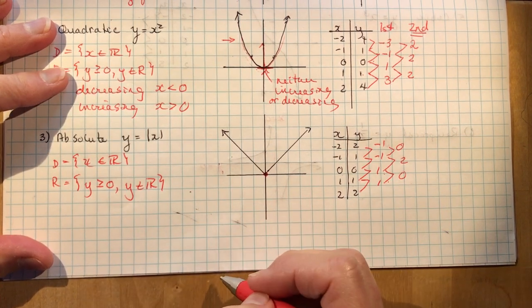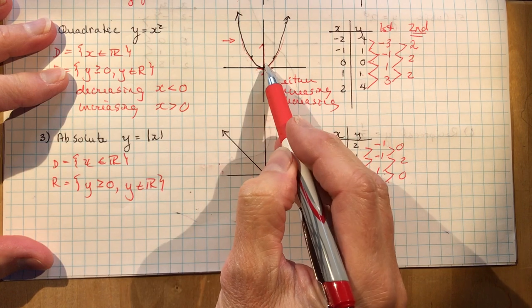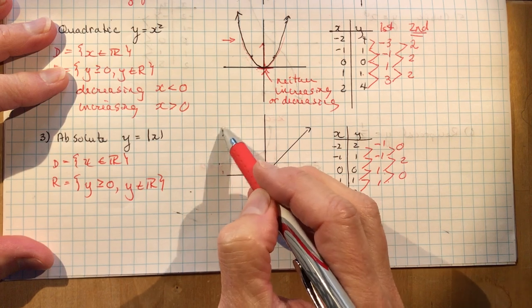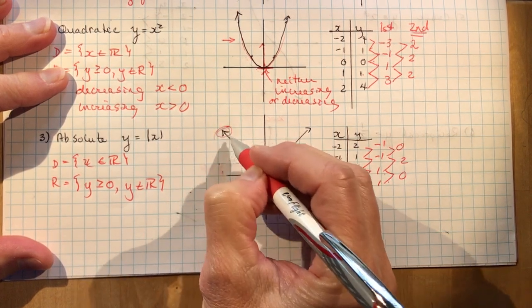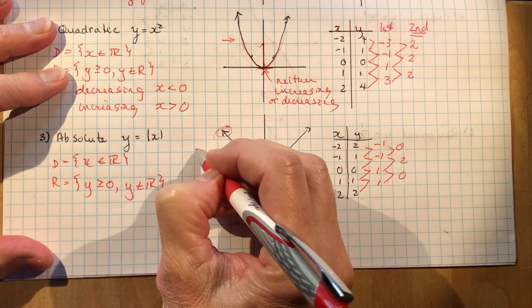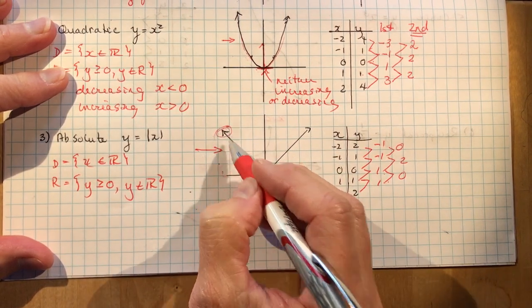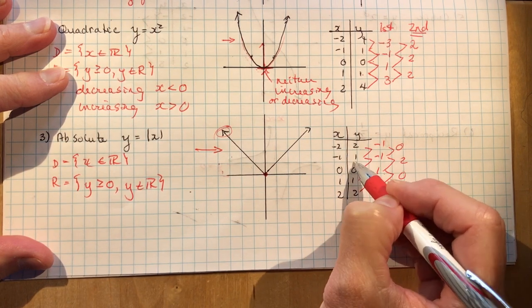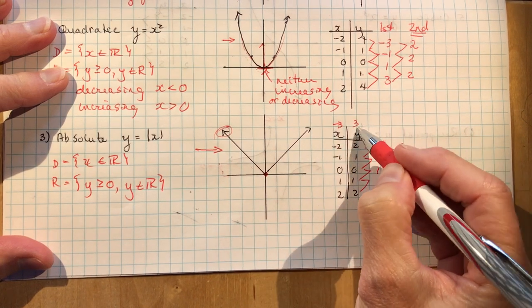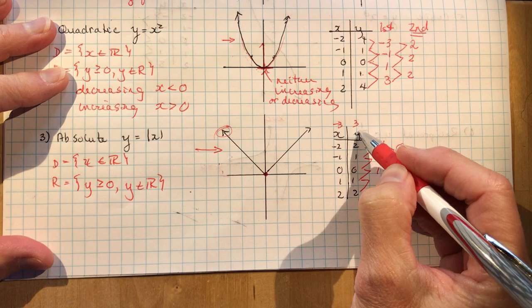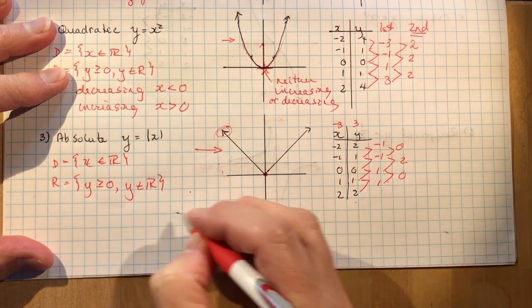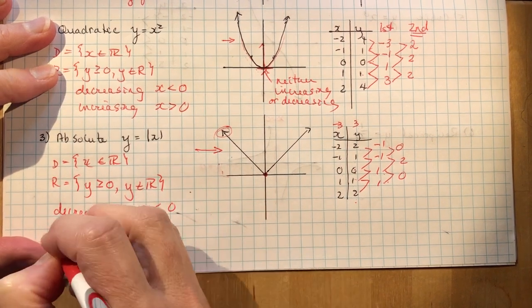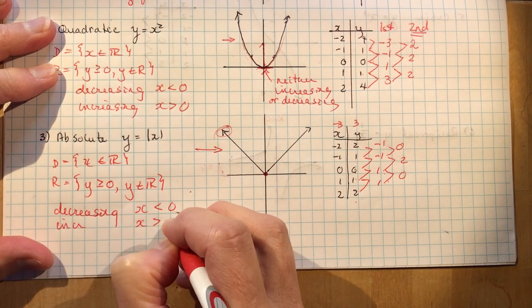For increasing and decreasing, the absolute value behaves the same as the quadratic. It's decreasing for x less than 0. Don't look at the arrow and think it's going up — you're reading left to right, looking at x values. As you come up from the left, the y values decrease from 3 to 2 to 1 to 0. So it was decreasing. Now past 0, it's increasing. It's decreasing for x less than 0 and increasing for x greater than 0.